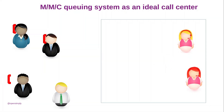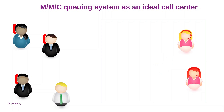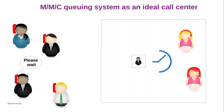Now if one more client is calling, no idle agent is found. This client is put on hold in the waiting line. One more client is calling — again, no idle agent is found, and this client is put on hold too.